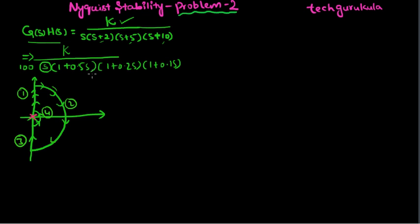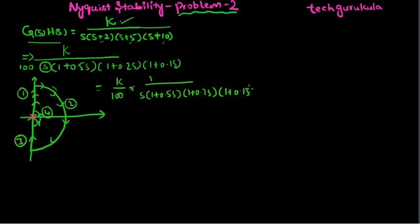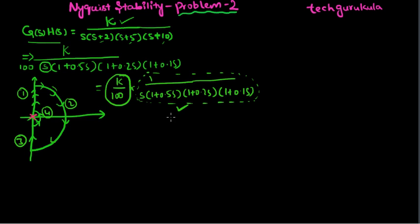Let's rewrite this. We can write this as K/100 times (1/S)(1 + 0.5S)(1 + 0.2S)(1 + 0.1S). Let's deal with the K/100 term later. This is in a very standard form: 1 over S×(1 + S·t1)(1 + S·t2)(1 + S·t3), where t1 = 0.5, t2 = 0.2, and t3 = 0.1.